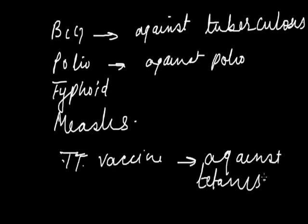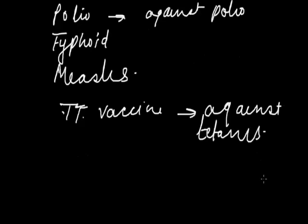Besides these, there is a Pulse Polio Program whose aim is to eradicate polio from our country. It was first held in December 1995. The oral polio vaccine, abbreviated as OPV, is given to children orally through the mouth as per the national immunization schedule.